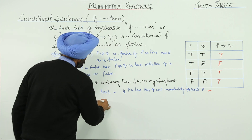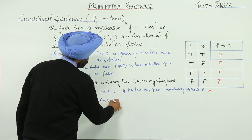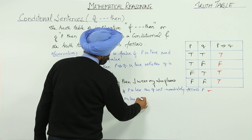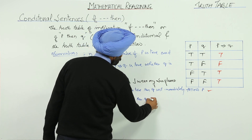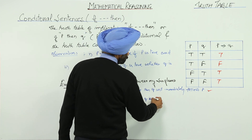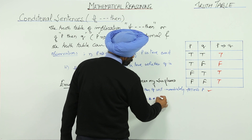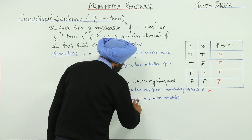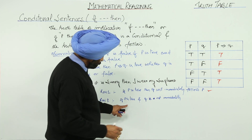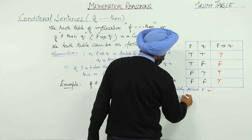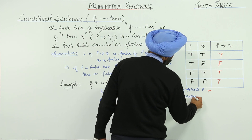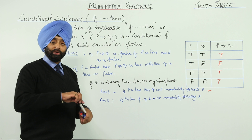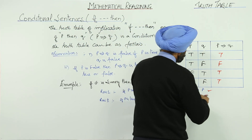Now, row 2: if P is true and Q is not immediately following P — it is sunny but I am not wearing my sunglasses — so Q is not immediately following P. That is why this is false.